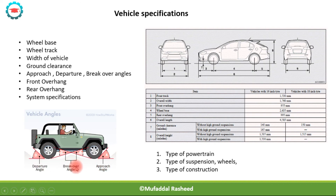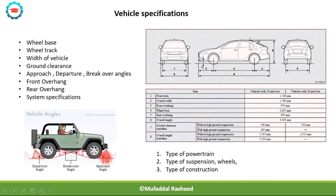The approach, departure, and breakover angles of the vehicle are shown here. They have a very important bearing on the off-roading capability of the vehicle. If a vehicle is designed to go off-road, these angles along with ground clearance will be very important. As you can see, the Jeep has a high approach angle, high departure angle, and high breakover angle. For a sports car, they will have very low approach, departure, and breakover angles.